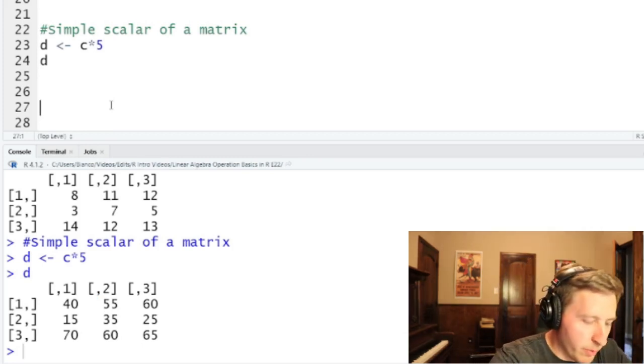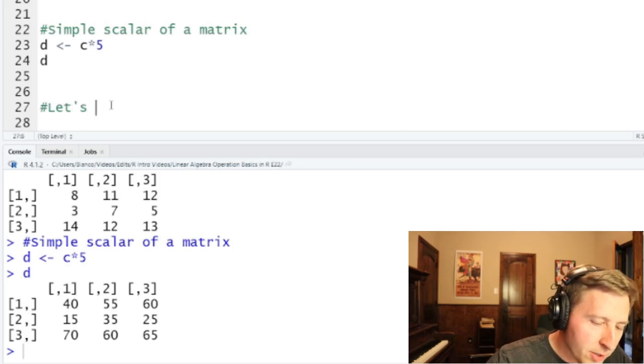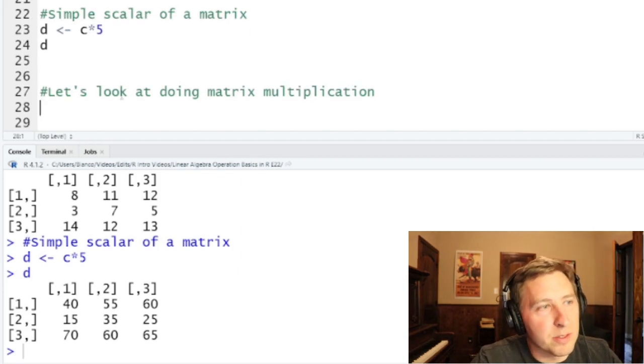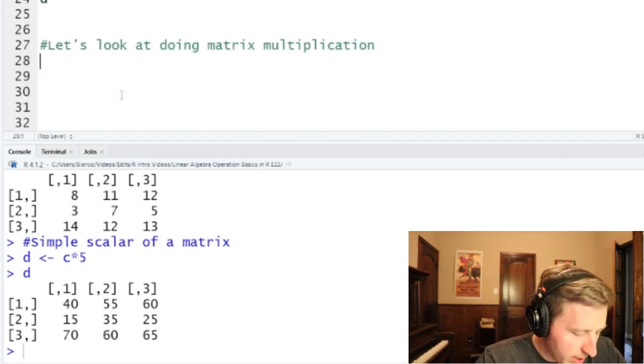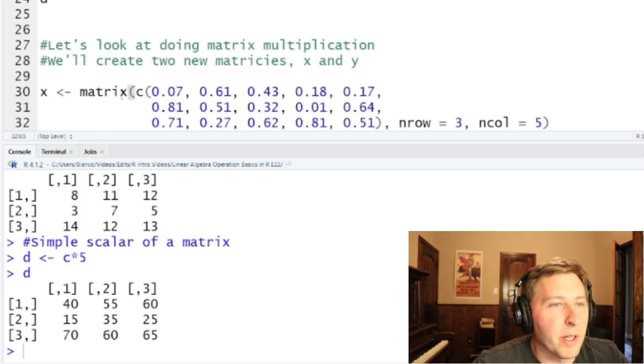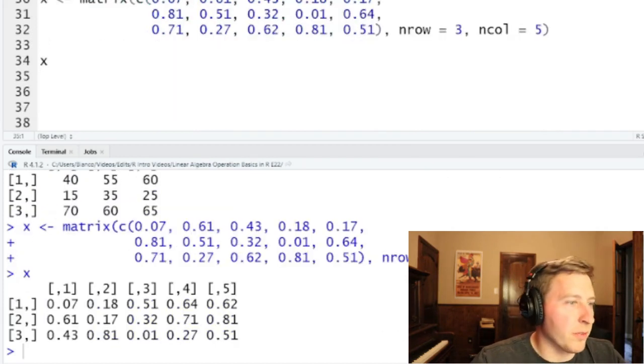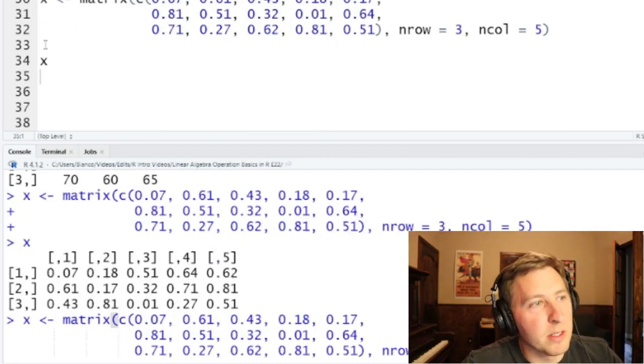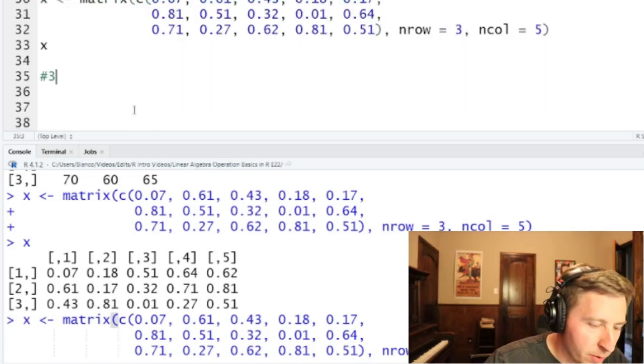But now let's look at something a little bit more complicated. Let's look at doing matrix multiplication, and more specifically I think it's called the dot product if you want to get into math terms technically speaking. And so to do this I need to make a new matrix. So we'll create two new matrices and in this case we'll call them x and y. Let me just create the x matrix real quick here. And we're going to create a three row by five column matrix. So a little bit different than the way I typed it out by hand, but it will give you a three by five. And this is important here for doing matrix multiplication. So we'll note three by five.